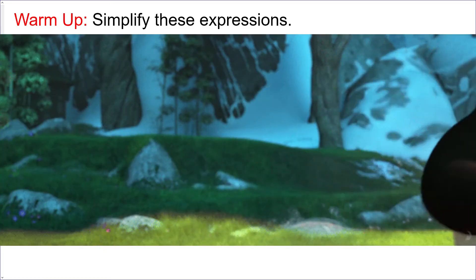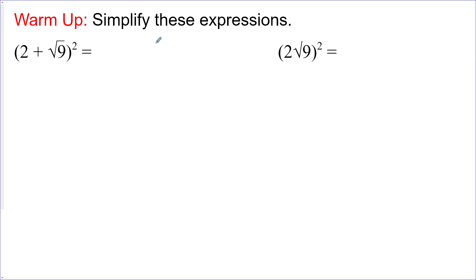Let's warm up and simplify these expressions. I made them simple enough so that we can do them two different ways. The first way would be just evaluating what's inside this bracket here. So two plus the square root of nine, which is just three, and then we can add two plus three and get five, and five squared is 25. We can be very confident about this because it doesn't involve any complex mathematics.